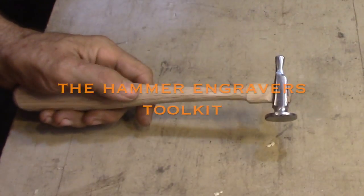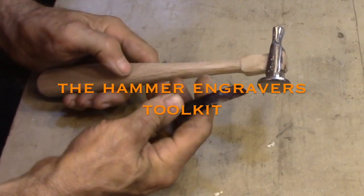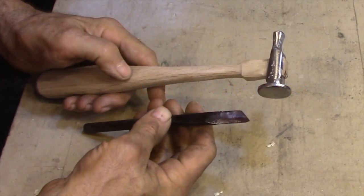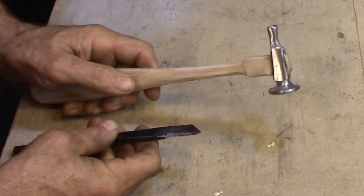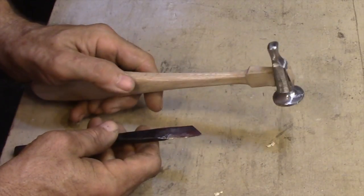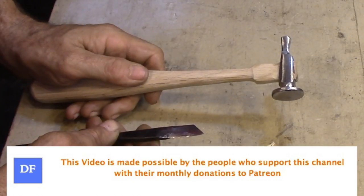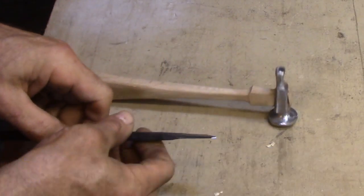Today I'm going to finish assembling the basic tool kit that you're going to need to do hammer engraving. I made the hammer head in the previous video. Today I'm just going to quickly put a handle on that hammer head and I'm going to be modifying one of the coal chisels that I already have made up into an engraving chisel.